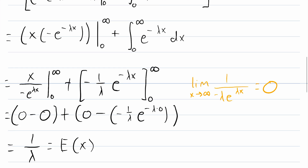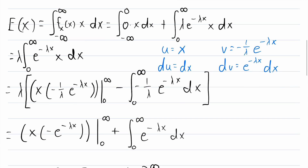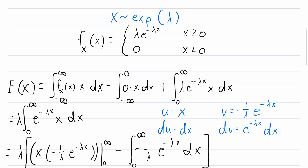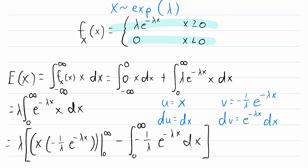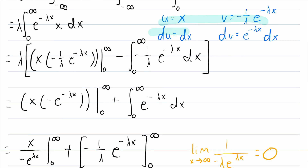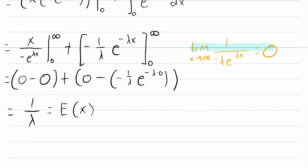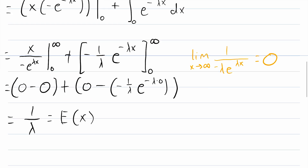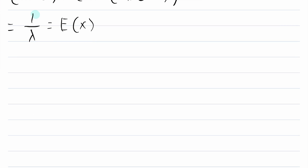Using the probability density function of the exponential distribution and the definition of expected value for a continuous random variable, we completed this integration, which we had to split up due to the piecewise nature of the PDF. We applied integration by parts and used L'Hôpital's rule to resolve the infinity over negative infinity indeterminate form, arriving at our answer: 1 over lambda.